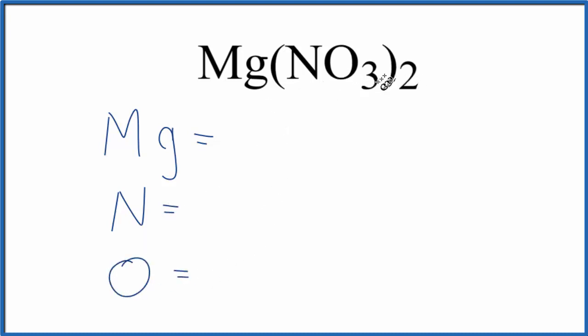When there's nothing written after Mg, we assume the subscript is one, so we have one atom of magnesium. For the nitrate, we also assume there's a one, but since it's in parentheses, it's multiplied by the subscript outside.